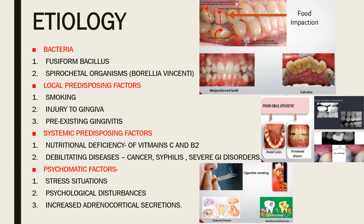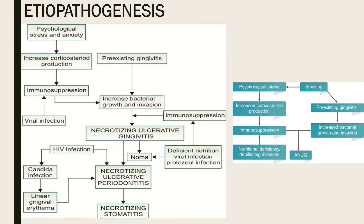Regarding etiopathogenesis: stress and anxiety lead to increased corticosteroid production, which causes immunosuppression. Immunosuppression then leads to increased bacterial growth, which ultimately leads to necrotizing ulcerative gingivitis.